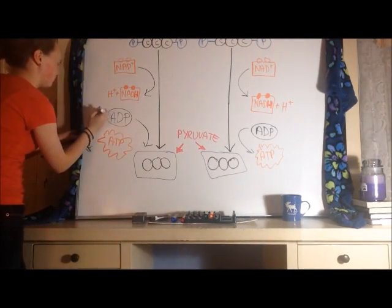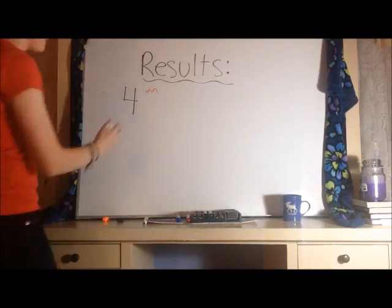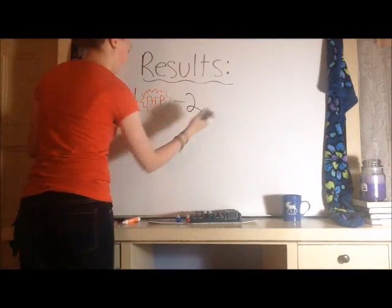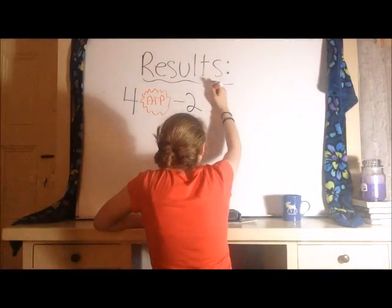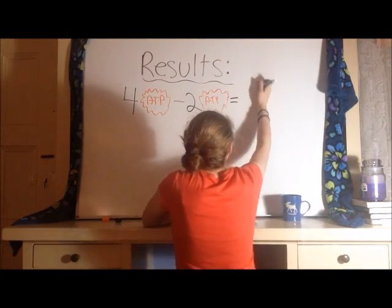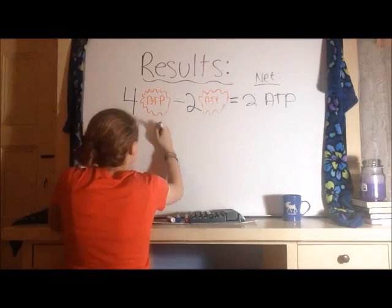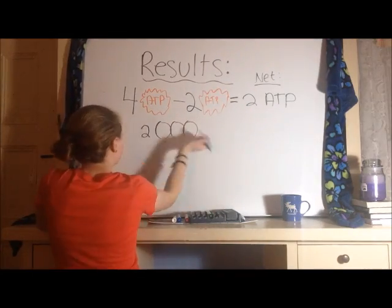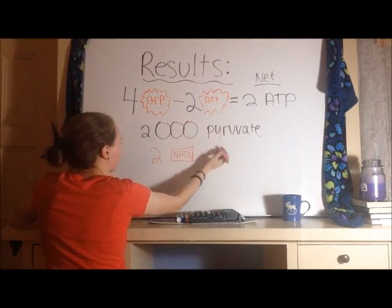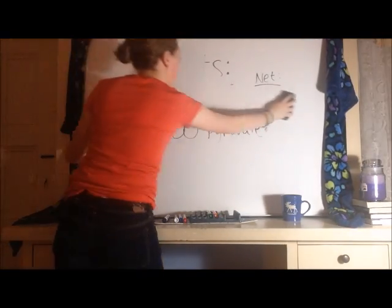Since there were two phosphates on each of the carbon chains, we need two ADP molecules per carbon chain to get rid of all the phosphates. The final results of glycolysis are four ATP molecules, but since we used two to give the phosphates to the six-carbon chain originally, there is a net production of two ATP molecules. Two molecules of pyruvate are produced for the citric acid cycle, and also two molecules of NADH and two hydrogen protons are produced which will be used in the electron transport chain.